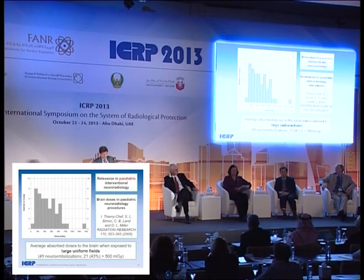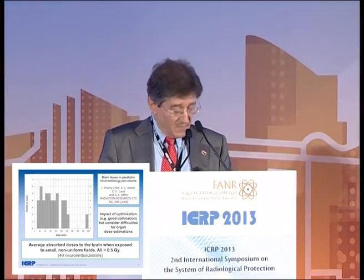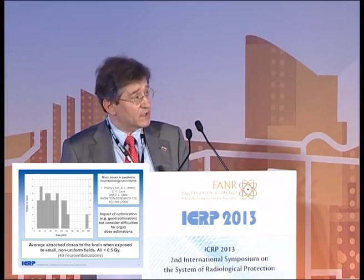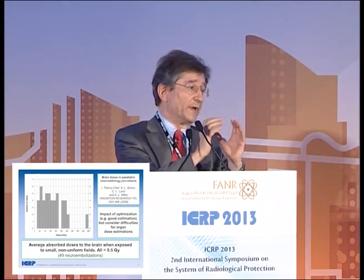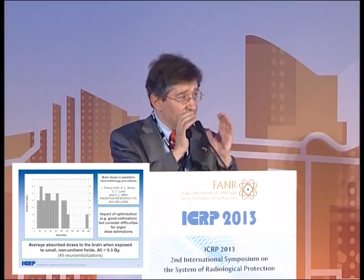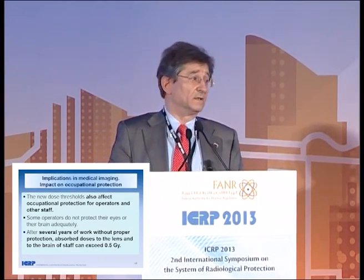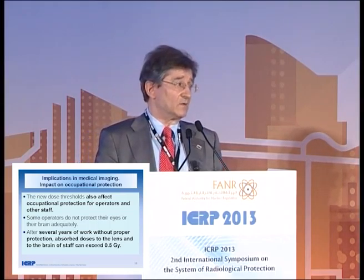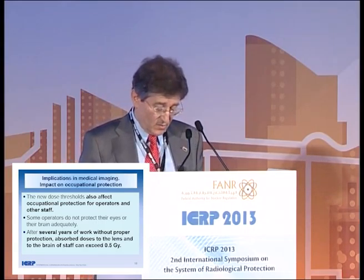Many of these neuroembolizations in children will have repeated procedures later. But look at the impact of optimization: if proper collimation is well applied to the same 49 cases, the dose to the brain is absolutely reduced. The authors assumed the neuroradiologist was only irradiating the lesion, collimating not just to improve image quality but to reduce organ dose. The conclusion is that optimization of procedures — which we must include in training programs for clinicians — can dramatically reduce the dose to the brain.